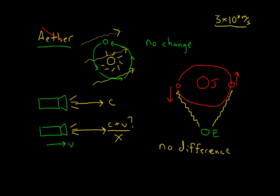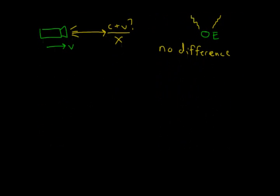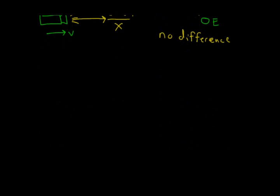So Einstein took this and said, I'm going to develop a new theory and it's going to be based on two postulates. The first postulate is that there is no, no preferred reference frame.